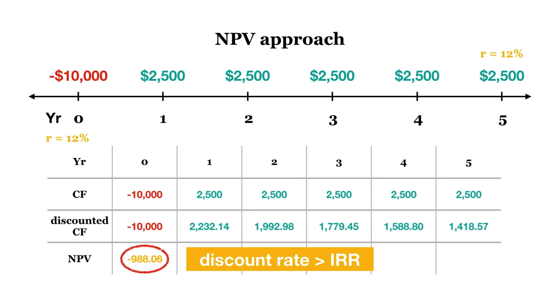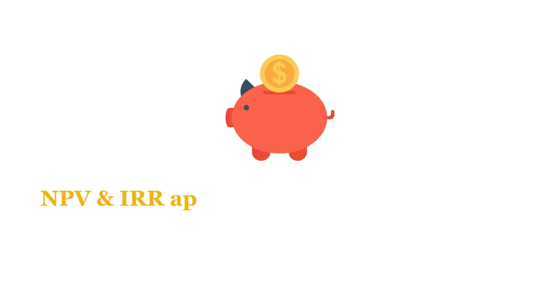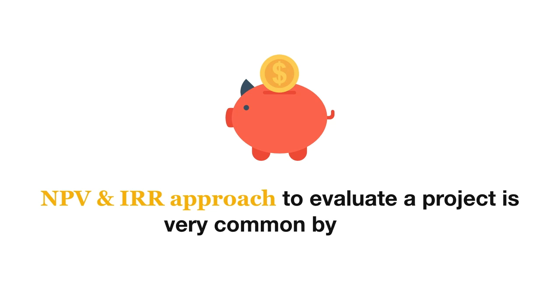Using the trial and error approach, we find the IRR of the above investment project, where NPV is equal to 0, is 7.93%. As the discount rate is 12%, we know that with a higher discount rate the NPV will be negative, and thus we will reject the project. Using both the NPV and IRR approach as well as other methods to evaluate a project is very common.